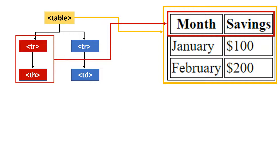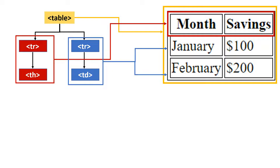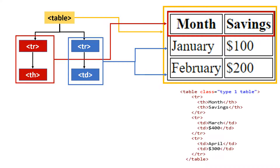Looking at the right side, the second tr child has another child tag called td, which is table data — we can also call it table body. In combination, this represents all the rows except the heading. The actual HTML script behind this table is shown here; you can pause the video to get a better understanding.